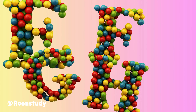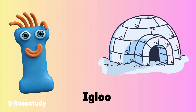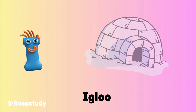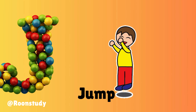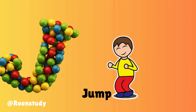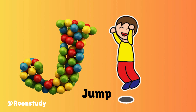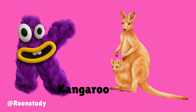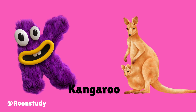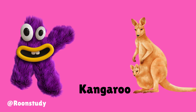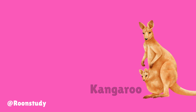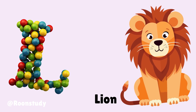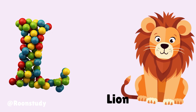I is for igloo, i-i-igloo. J is for jump, j-j-jump. K is for kangaroo, k-k-kangaroo. L is for lion, l-l-lion.